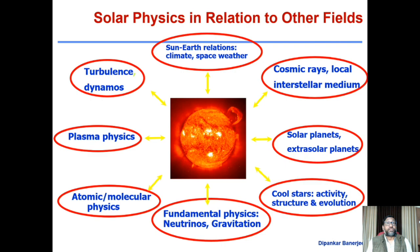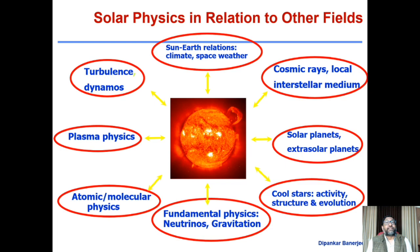Space weather refers to the environmental conditions in interplanetary space between the sun and Earth. There is also the important aspect of climate — we're all concerned about global warming. Is the sun also somehow responsible? A combination of solar radiation output and our local environmental changes makes the main driver for climate change. So we do study those elements as well.